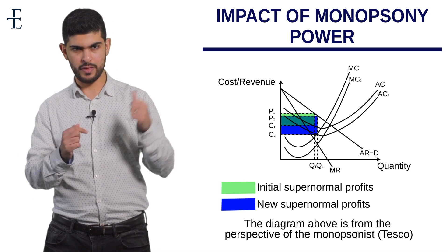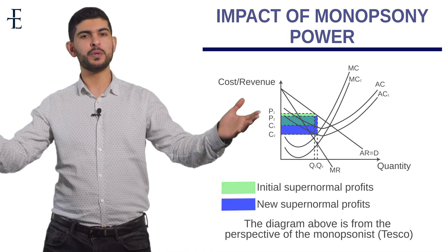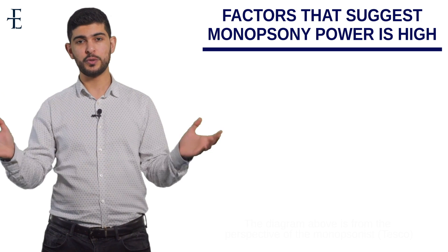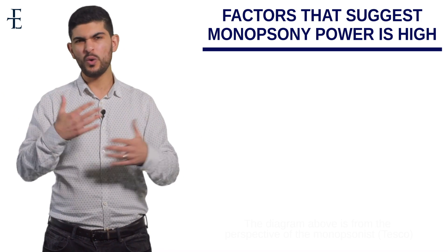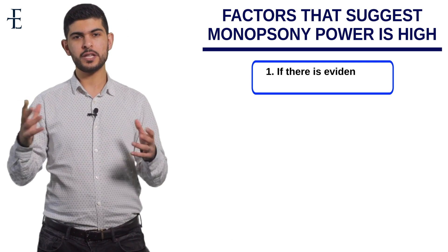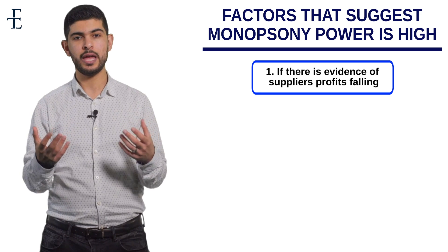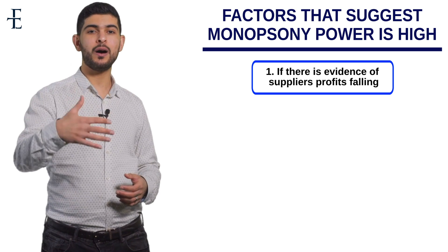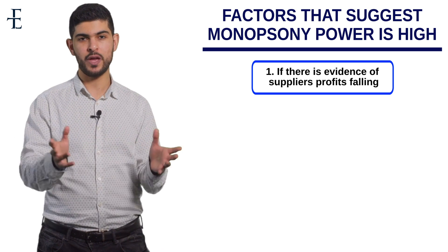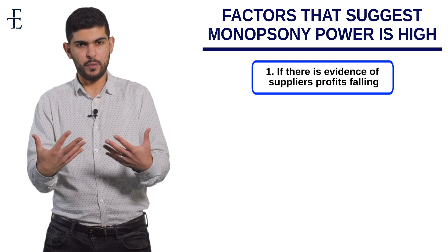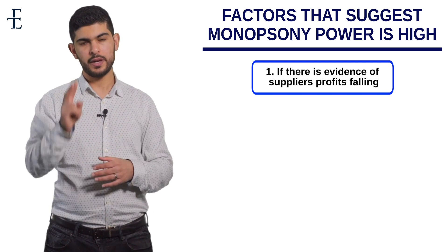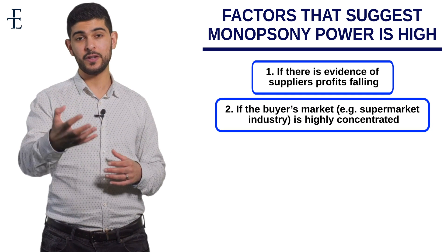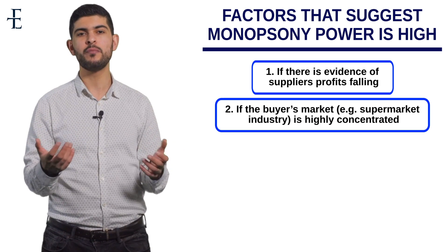Bear in mind that the price has just gone down. Now let's go through the factors that suggest monopsony power in a market is high, then the factors that limit it. Number one: monopsony power may be high if there is evidence of suppliers' profits falling, because Tesco would push down the price they pay for produce, squeezing supplier profits. Number two: look at the concentration ratio — if there are only a handful of buyers, that suggests a high degree of monopsony power, as suppliers have no choice but to sell to one of them.